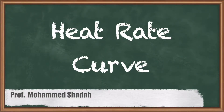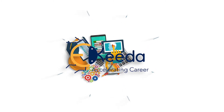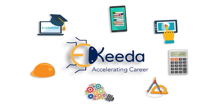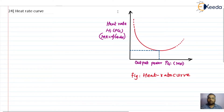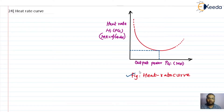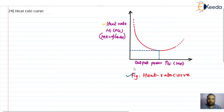In this video lecture we are going to discuss the heat rate curve. In the last lecture we discussed the input-output characteristics for the generator operating in the thermal power station. Now we are going to discuss the heat rate curve for generators operating at thermal power stations. You can see here it is a graph of heat rate versus output power.